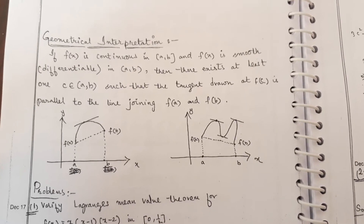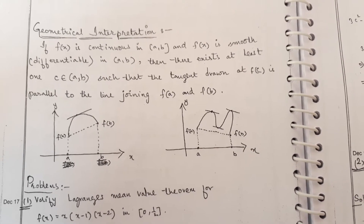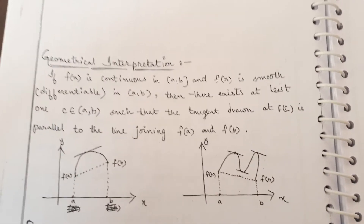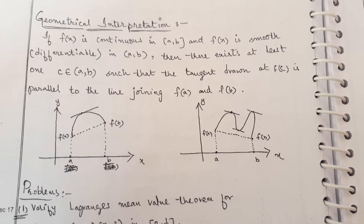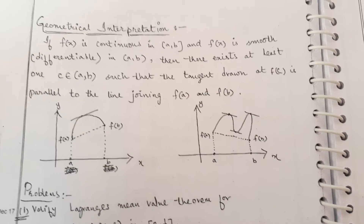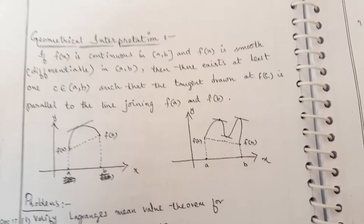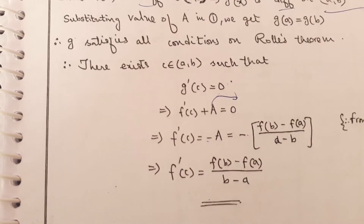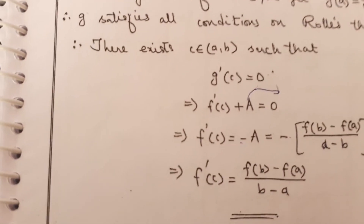Geometrical representation: if f(x) is continuous on closed interval [a, b] and f(x) is smooth and differentiable on (a, b), then there exists at least one c in (a, b) such that the tangent drawn at f(c) is parallel to the line joining f(a) and f(b). Lagrange's mean value theorem is very important — it was asked in exams in 2012, 2013, 2019, 2017, and 2015.